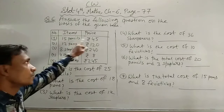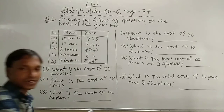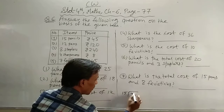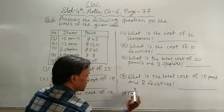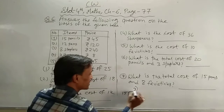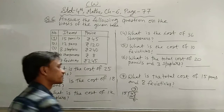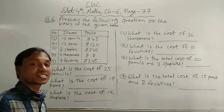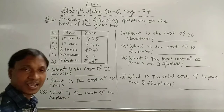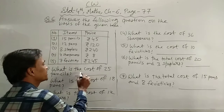15 का table में 45 कितने बार आता है? या फिर divide कर लो। जैसे 15 से 45 divide करो — 3's are 45, answer 0. तो एक pencil का cost 3 rupees है। एक pencil का cost अगर 3 होगा, तो 25 pencil का cost कितना होगा? 25 into 3 = 75 rupees.